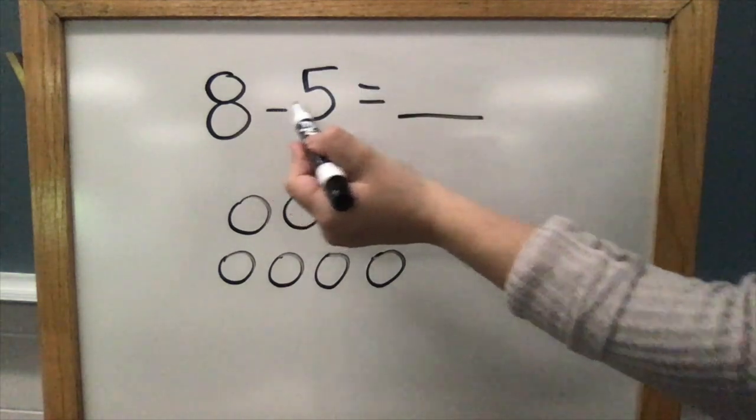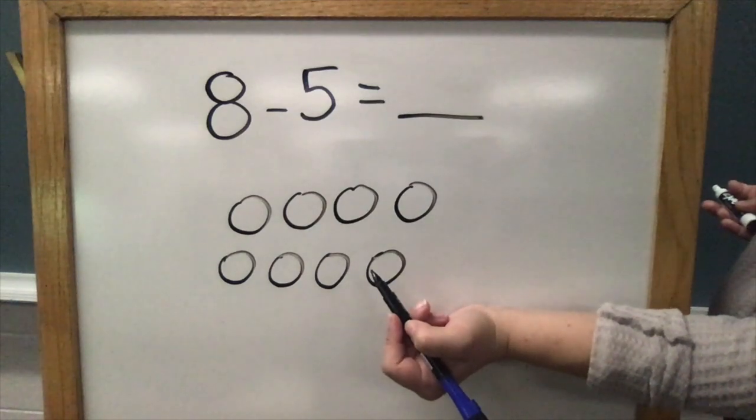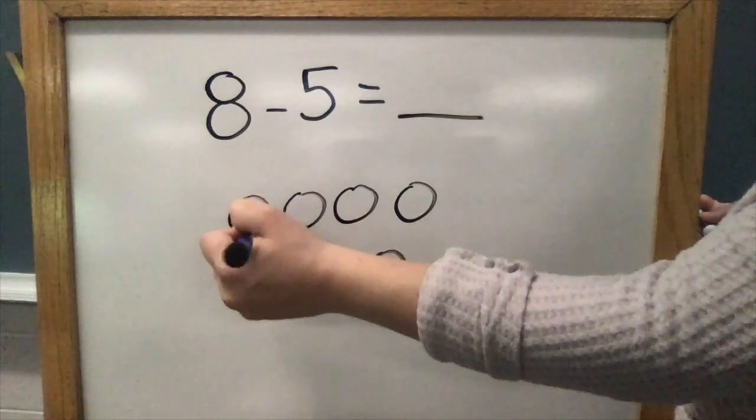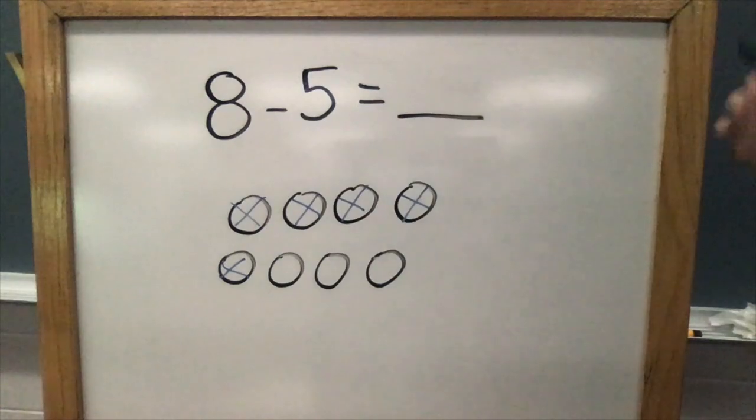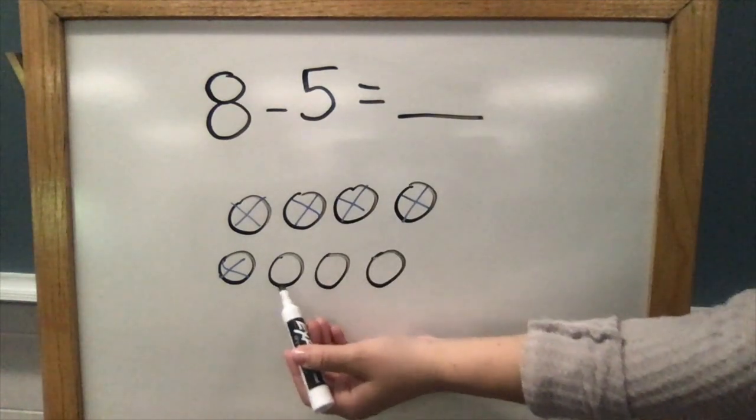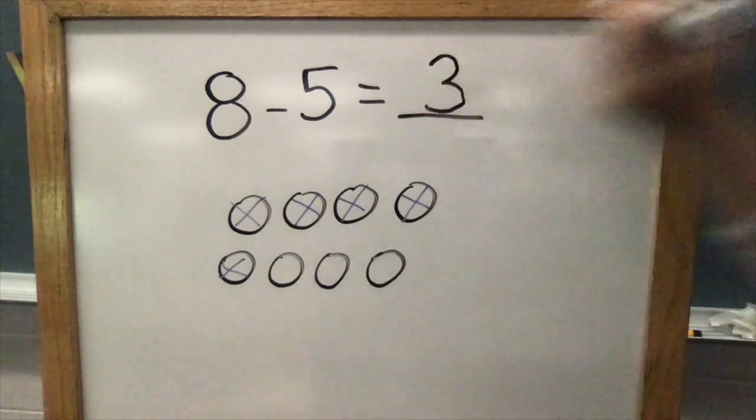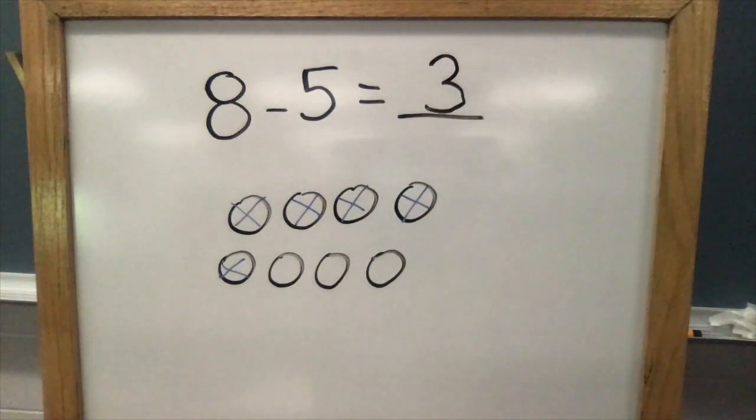Take away five. How could I show that I took away five? You've got it, five X's. How many are left? Let's count. One, two, three. 8 - 5 = 3.